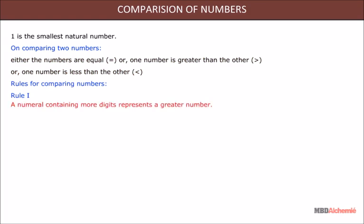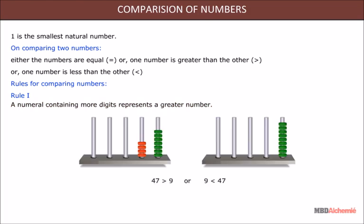Rules for comparing numbers. Rule 1: A numeral containing more digits represents a greater number. For example, 47 is greater than 9, or 9 is less than 47. 128 is greater than 72, or 72 is less than 128. 1534 is greater than 345, or 345 is less than 1534.